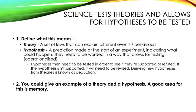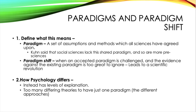It may then be a good idea to give an example of a theory and a hypothesis. A good area for this is memory, because there's a lot of research we've learnt about. You could easily include one of those and give what the hypothesis would have been as well as what the theory is — for example, capacity, duration, and coding of short-term memory. You could also integrate these examples into your definitions so that everything flows clearly.